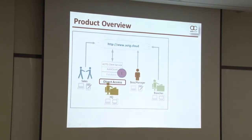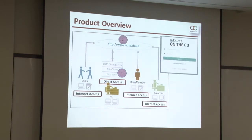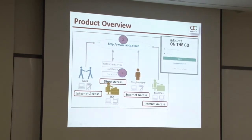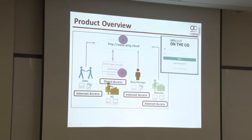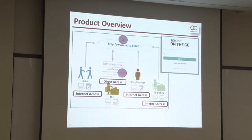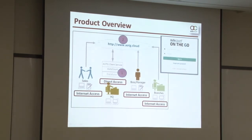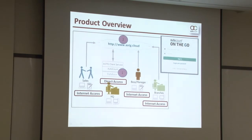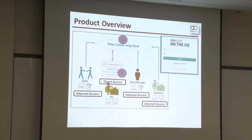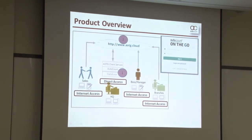How about for people on the go? As for those who are on the go — such as the salesperson, directors, and also the staff from branches — they can easily log in to AOTG through internet access. For login, they just need to enter the email address and also the password. Once logged in, they can access the AutoCount Accounting database and perform transactions.